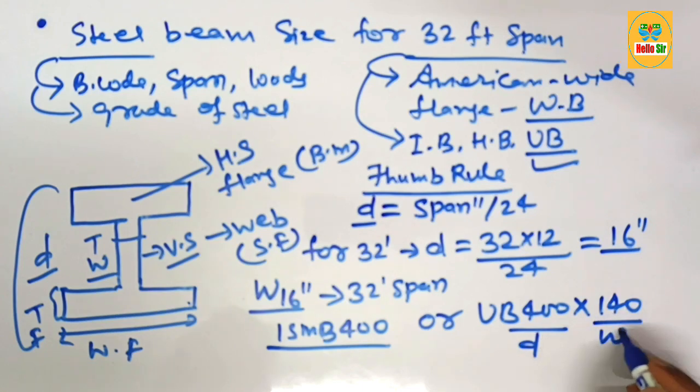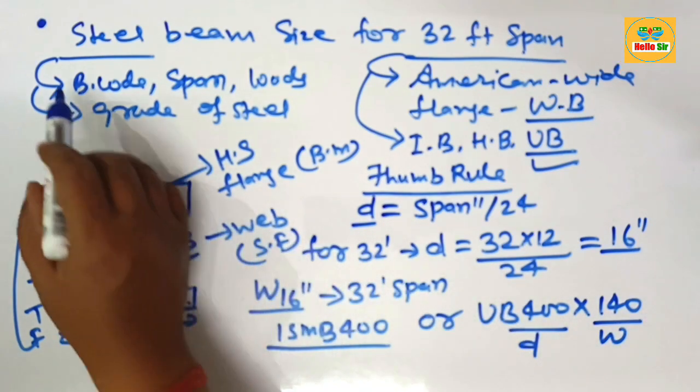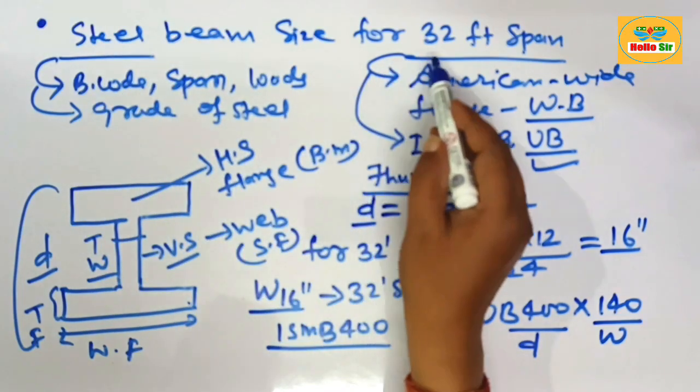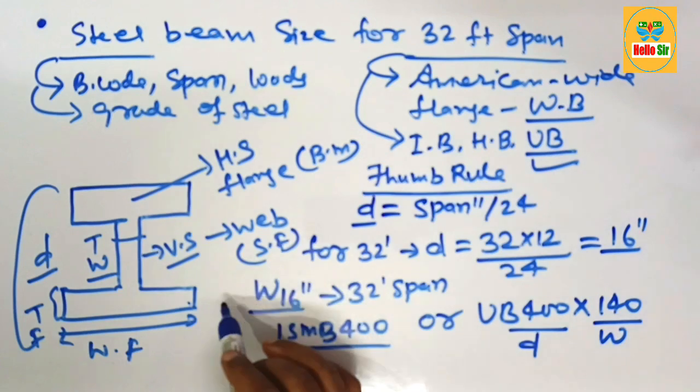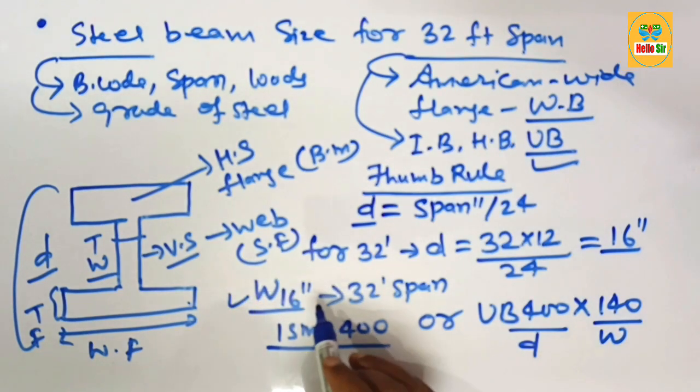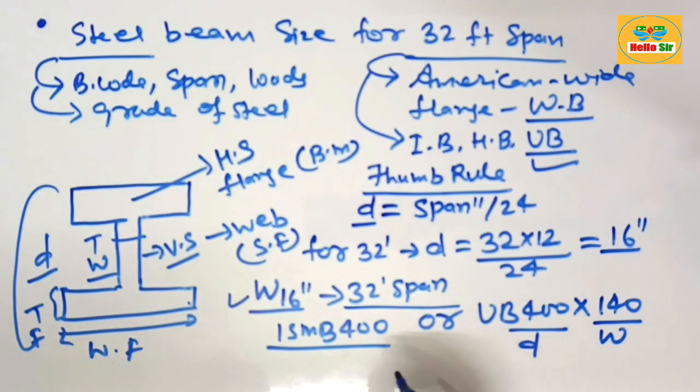This one is the depth section of the beam and this one is the width section of beam. Your question is what size steel beam required for 32 foot span? It means you need American wide flange W 16 inch steel beam required to span 32 foot length. Thank you.